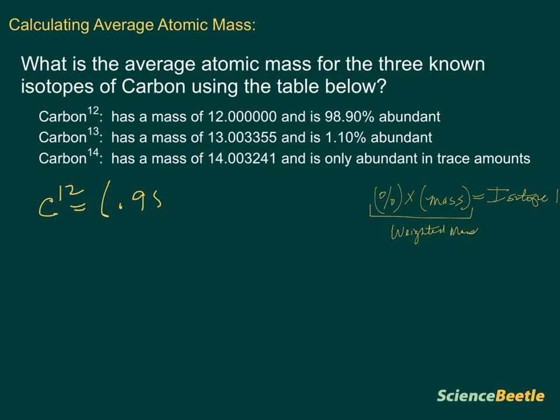And we're going to multiply this times the mass, which in this case is 12.0000 and a few other zeros there. And that will be the first one. We're going to add this to the percent abundance and mass for carbon-13.